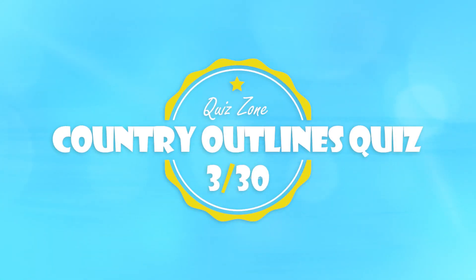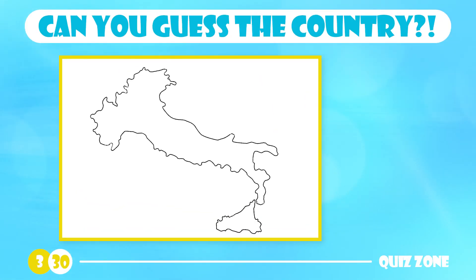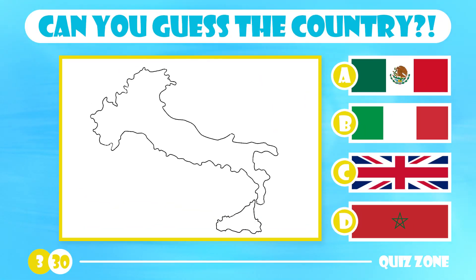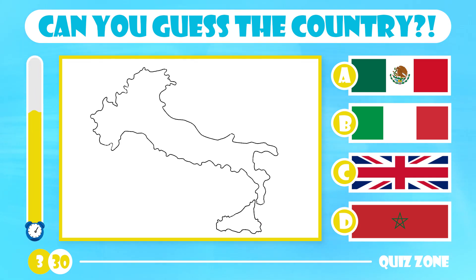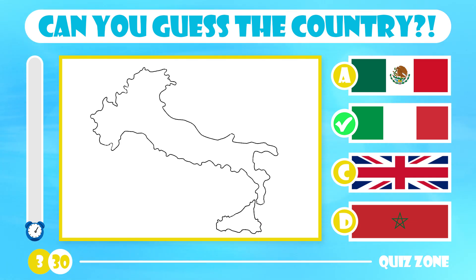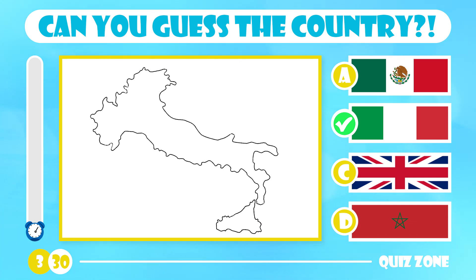Let's make it a bit harder. Can you name this country? Mexico, Italy, the United Kingdom or Morocco? The answer is Italy. This country has a unique shape resembling a boot. Italy shares borders with France, Switzerland, Austria, Slovenia, San Marino and Vatican City.